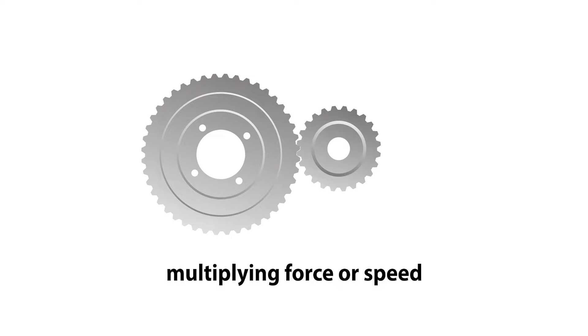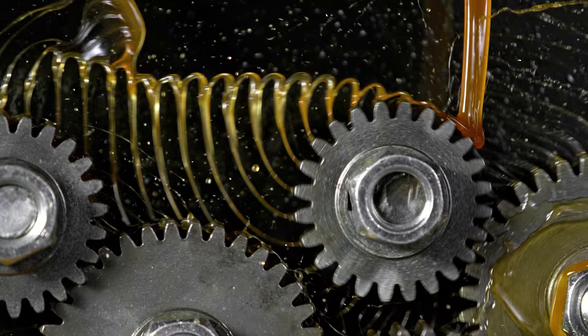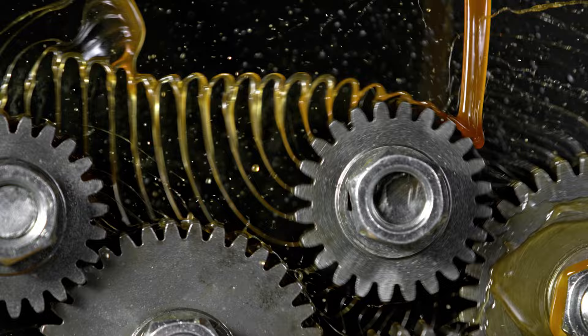The second function is multiplying force or speed. Different gear sizes allow multiplication of the applied force or speed. Smaller gears moving over more distance can multiply force, while a larger gear turning a smaller one can increase speed.